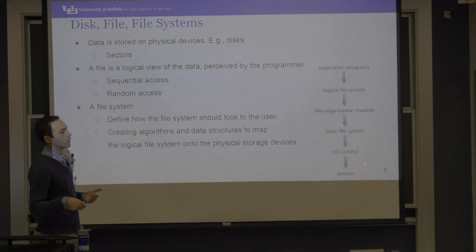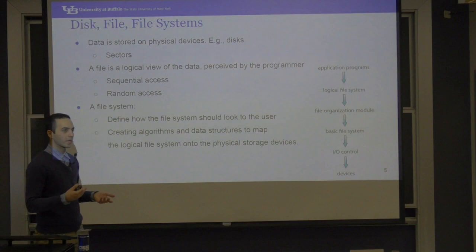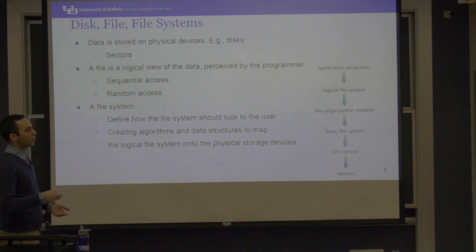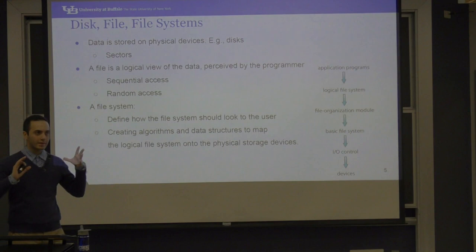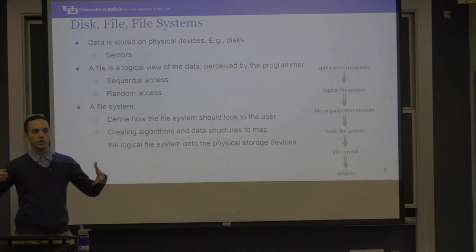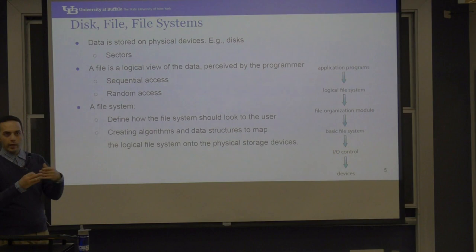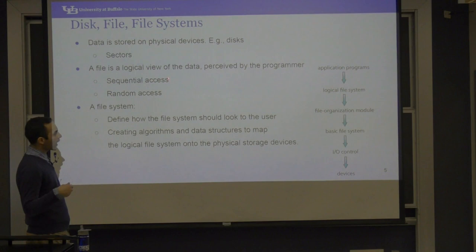The devices communicate with an I/O controller on your system, which gives them a basic communication to the disk — what is requested, and retrieves the data in whatever format they define. Above that is the basic file system, which tells the device what data to save at which location. The disk is a huge addressable space that you can store or load from. The I/O controller communicates that with the device.